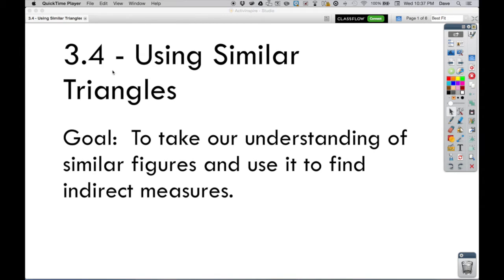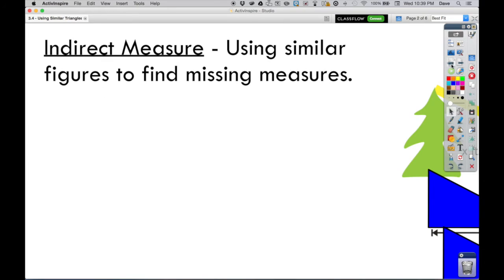Lesson 3.4: Using Similar Triangles. Our goal today is to take our understanding of similar figures and use it to find indirect measures. Let's first talk about indirect measures. It means we can't take a direct measurement. We're going to use similar figures to find missing measures instead.